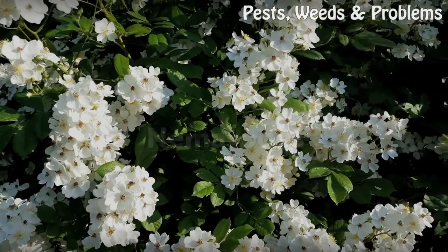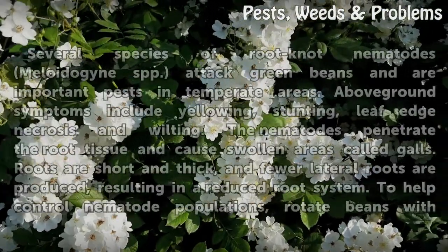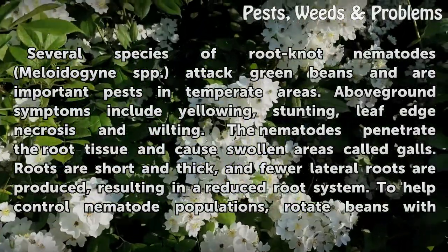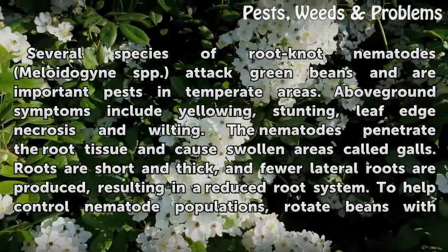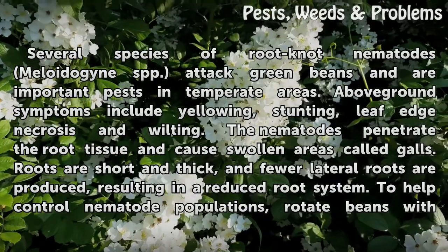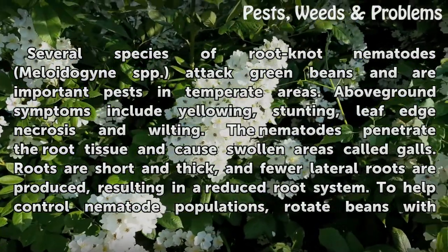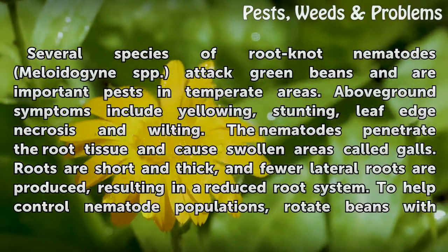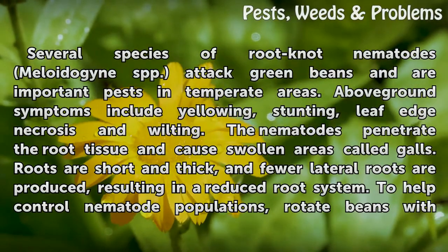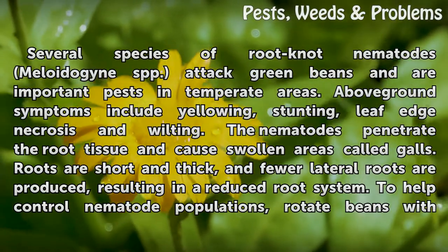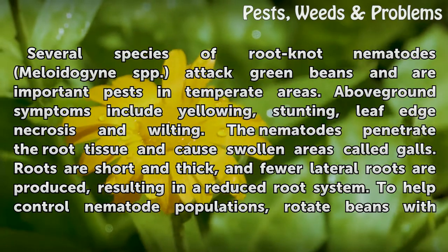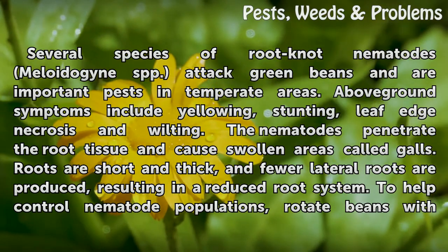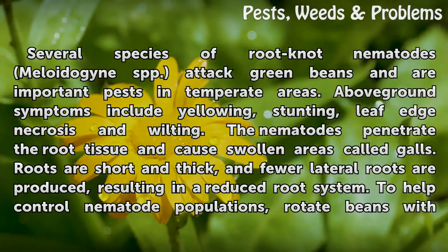Nematodes. Several species of root-knot nematodes, Meloidogyne spp., attack green beans and are important pests in temperate areas. Above-ground symptoms include yellowing, stunting, leaf-edge necrosis, and wilting. The nematodes penetrate the root tissue and cause swollen areas called galls. Roots are short and thick, and fewer lateral roots are produced, resulting in a reduced root system.